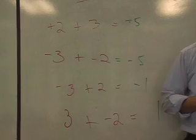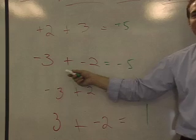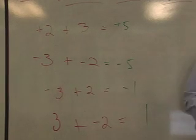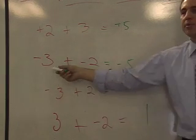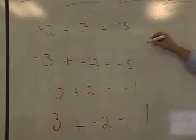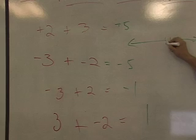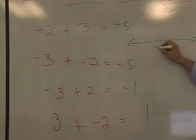Negative 3 plus negative 2. Now we're dealing with negatives, so we're on the left side of the number line. If we're on a number line like this, we're going from 0 over to negative 3.